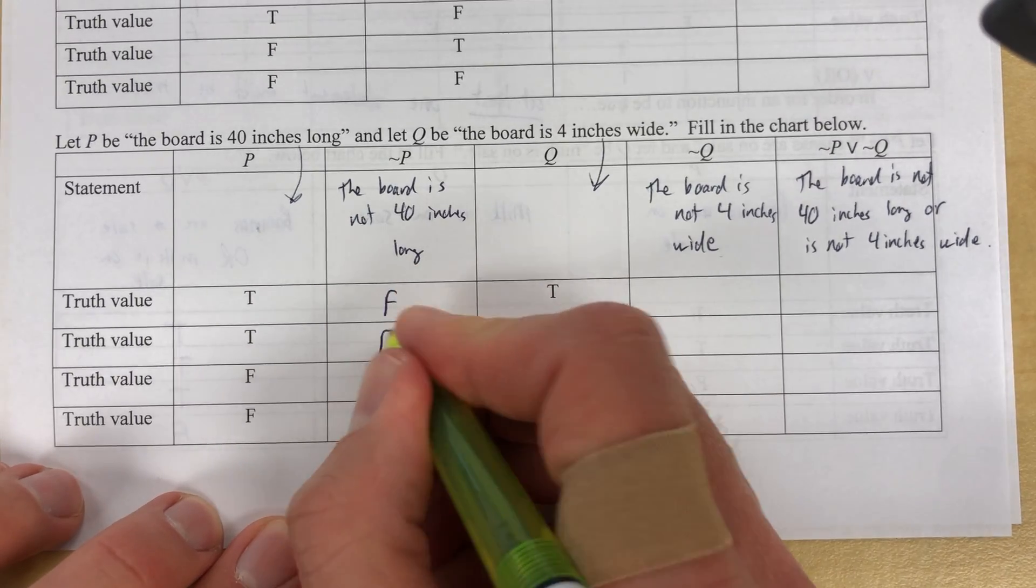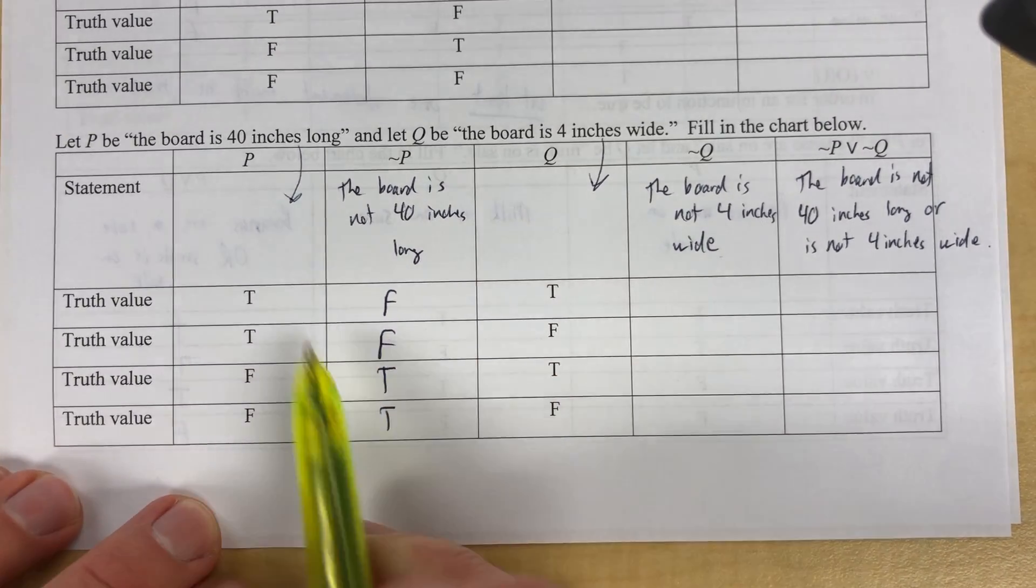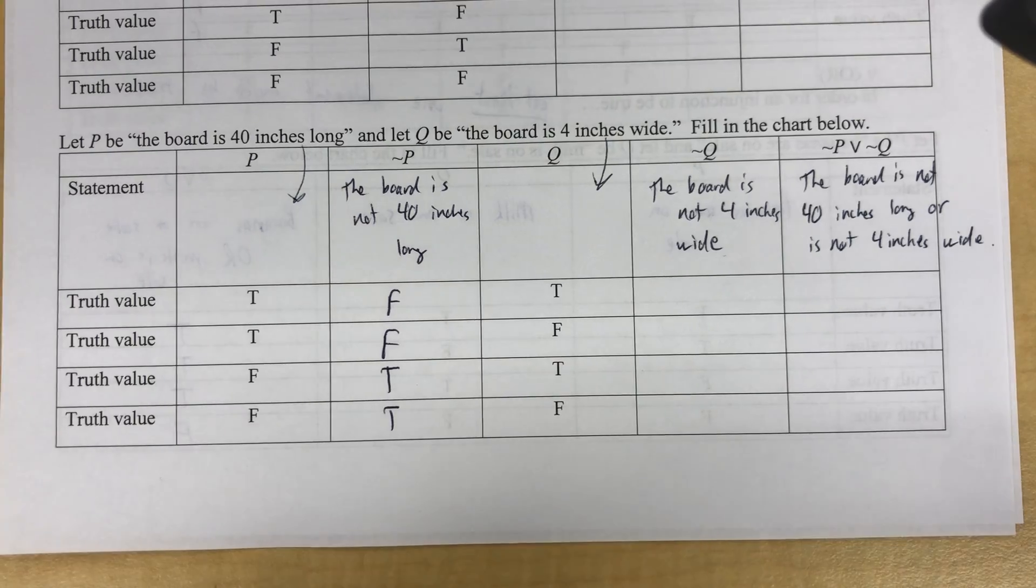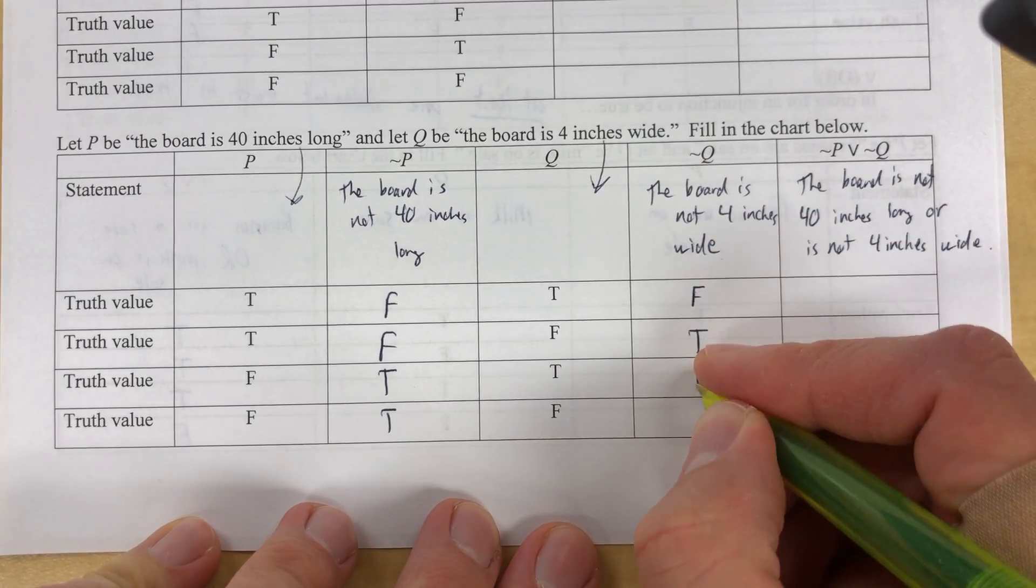But I'm going to write this or this. I'm going to write them both, but I'm going to write this with the word or than this. So the board is not 40 inches long or is not four inches wide. There are some grammatical things we could do here. We could say the board is not 40 inches long, nor is it four inches wide. That's cool, too. I just wanted to be a little more consistent with what we're doing and we will fill in some obvious things. False, false, true, true. There we go.